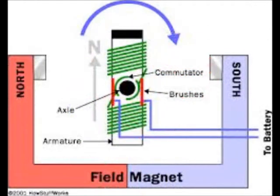This current is controlled by the commutator, here in the middle, which depending on the position of the rotor lets the current flow in the correct direction to create the necessary induced magnetic field to produce a rotation. And briefly, this is how the electric motor works.